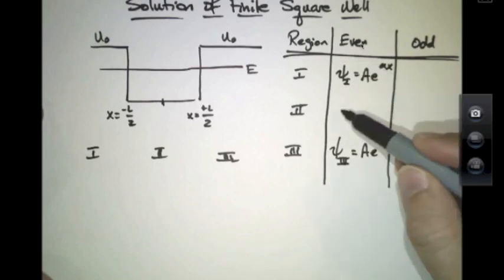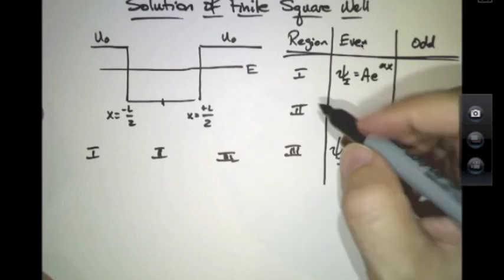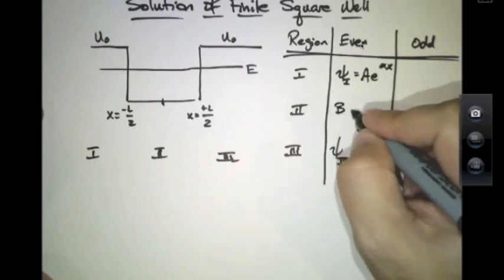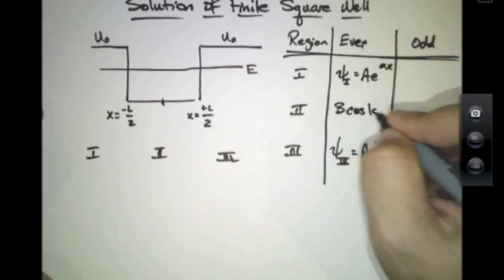For the even solutions, I expect sinusoids in the in-between region. The only even sinusoid is going to look something like b cosine k x.